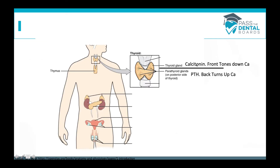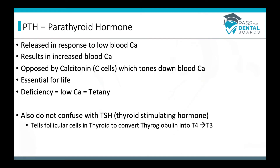Calcitonin, on the thyroid on the front, is going to tone down blood calcium. So if we have too high blood calcium, calcitonin gets secreted. On the back, where the parathyroid gland is, it secretes PTH in response to low blood calcium to turn it up. So parathyroid hormone is released in response to low blood calcium, raising the blood calcium. It is opposed by calcitonin in the C cells, which tones down high blood calcium.